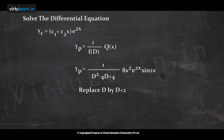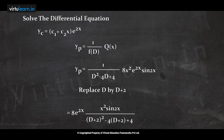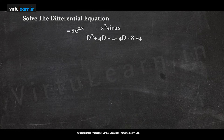Writing 8 and e^(2x) outside: we get 8e^(2x) · [1/((D+2)² - 4(D+2) + 4)] · x²sin(2x). Expanding the denominator: D² + 4D + 4 - 4D - 8 + 4 = D². All other terms cancel, leaving 8e^(2x)/D² · x²sin(2x).